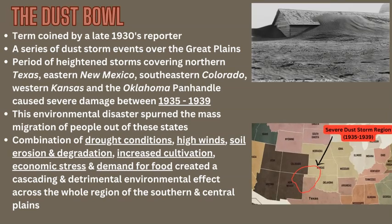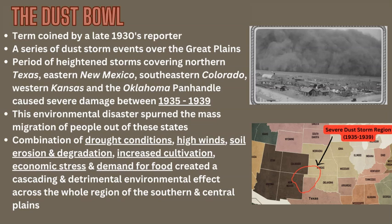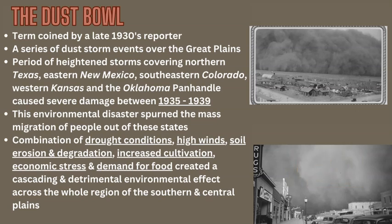The coined phrase 'Dust Bowl,' named by a journalist in the late 1930s, referred to areas of northern Texas, eastern New Mexico, southeastern Colorado, western Kansas, the Oklahoma panhandle, and central Oklahoma. Between 1934 and 1935, a series of droughts and wind-driven dust storms — some large, some small — caused constant wind and soil erosion, depositing millions of tons of dust as far east as the Atlantic Ocean.